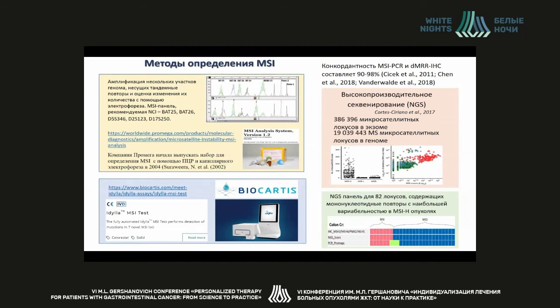In the genome there are about 400,000 microsatellite repetitions. Authors such as Cortes and Seriano demonstrated high concordancy of the MSI assessment with standard methods, molecular genetic methods, and with full sequencing. This type of sequencing should be the gold standard because it makes it possible to assess the real mutations that lead to new epitopes. This is not limited to microsatellites but can reveal areas where amino acids are being replaced.